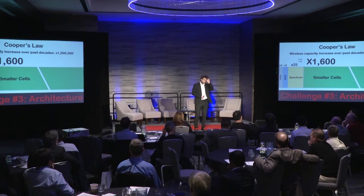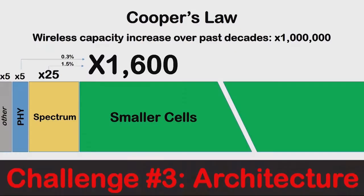So where do we get the capacity from? Look at this — wireless capacity, how has it increased over the last decades? It turns out there's a law called Cooper's Law: capacity in the last 35 years has multiplied by a factor of a million. As we went from 2G to 3G to 4G, it's about a million.